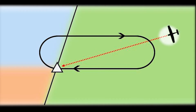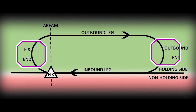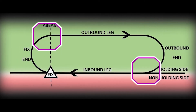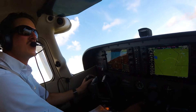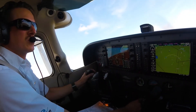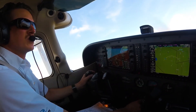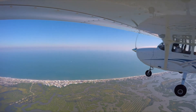Using the flight management system, a pilot will be told to fly to the fix and upon reaching the fix make the appropriate entry to become established on the hold. Standard rate turns are used to transition the holding aircraft between the inbound and outbound legs.